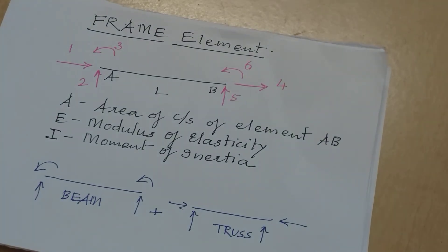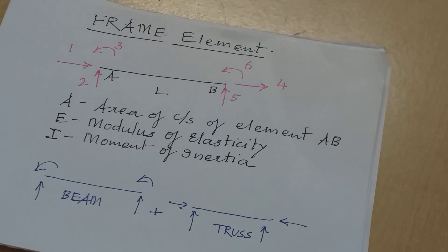Since the frame element is a combination of beam and truss elements, naturally the stiffness matrix for the frame element will also be a combination of the stiffness matrices of the beam element and the truss element, which we have already seen.